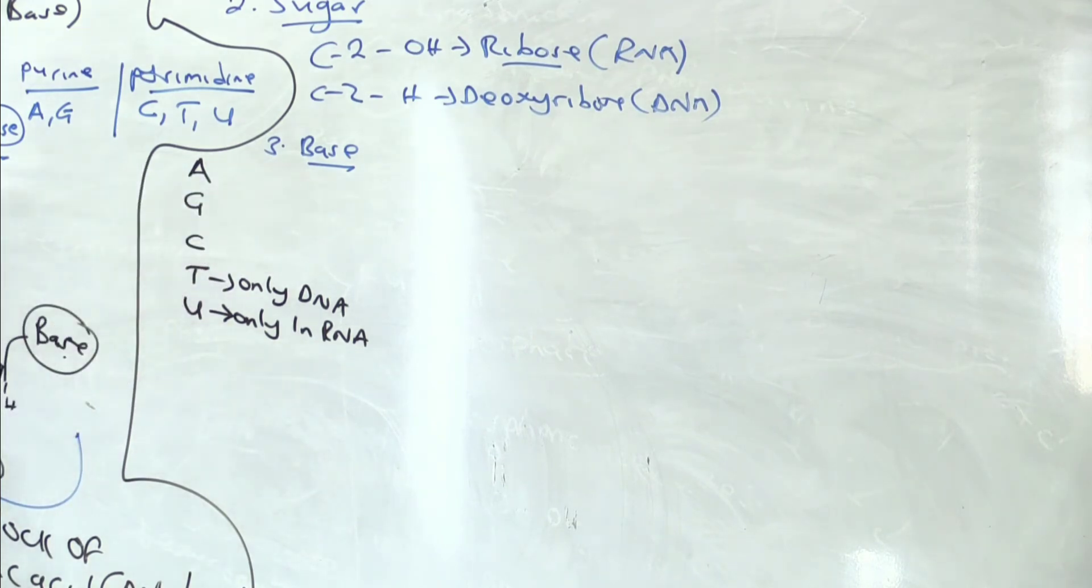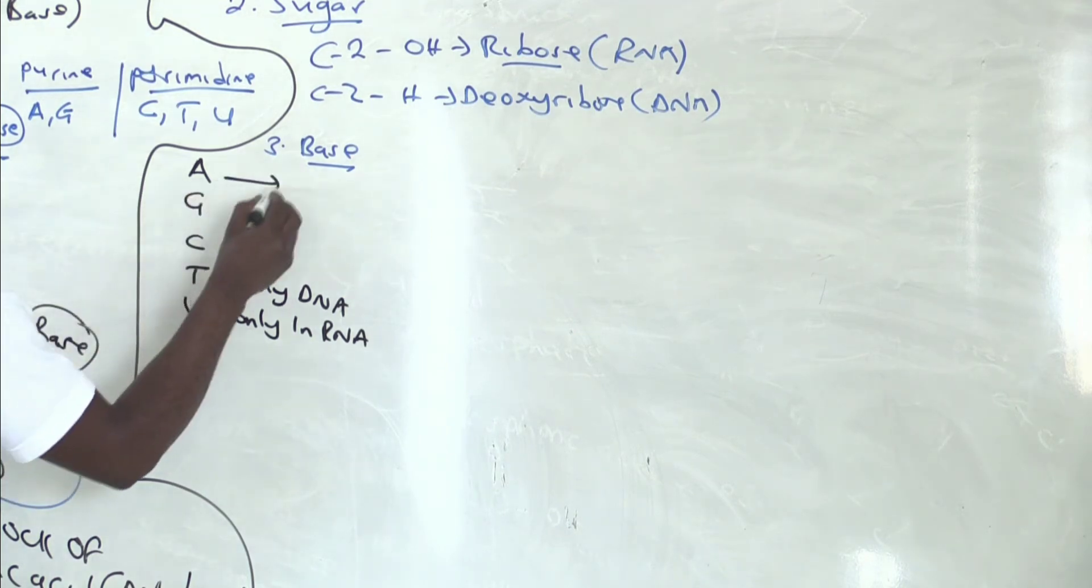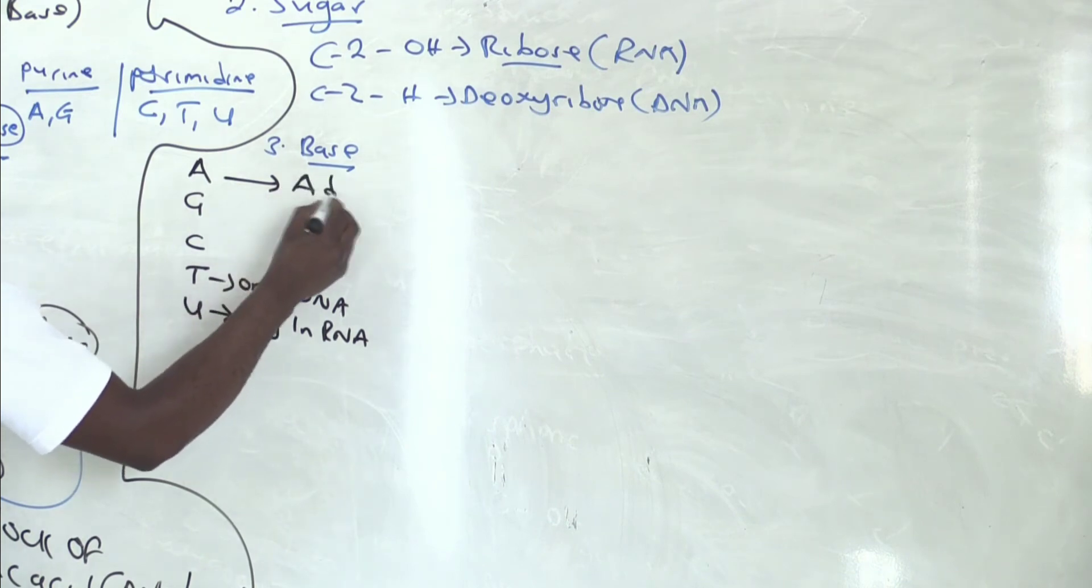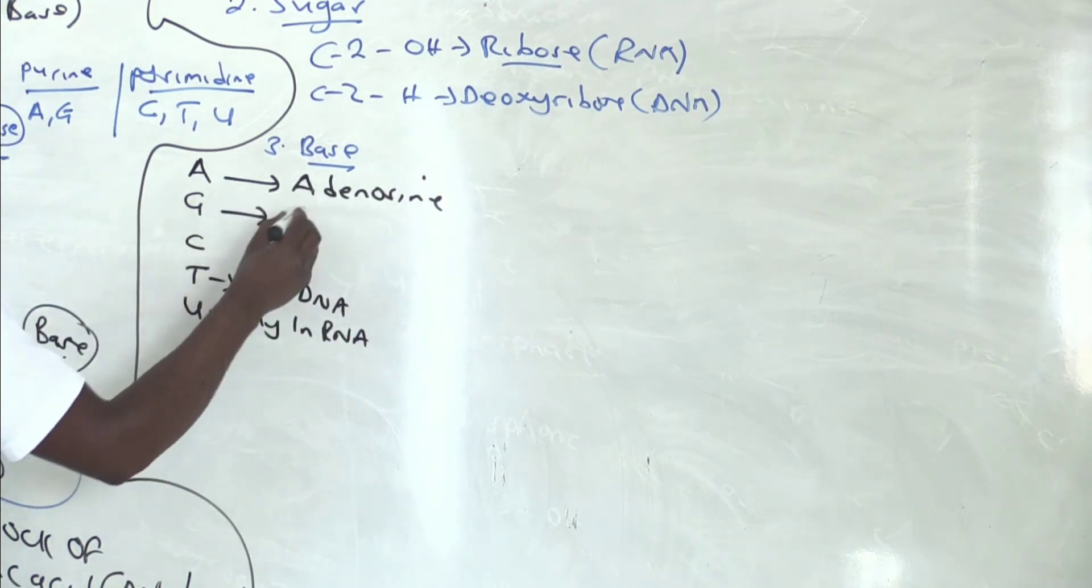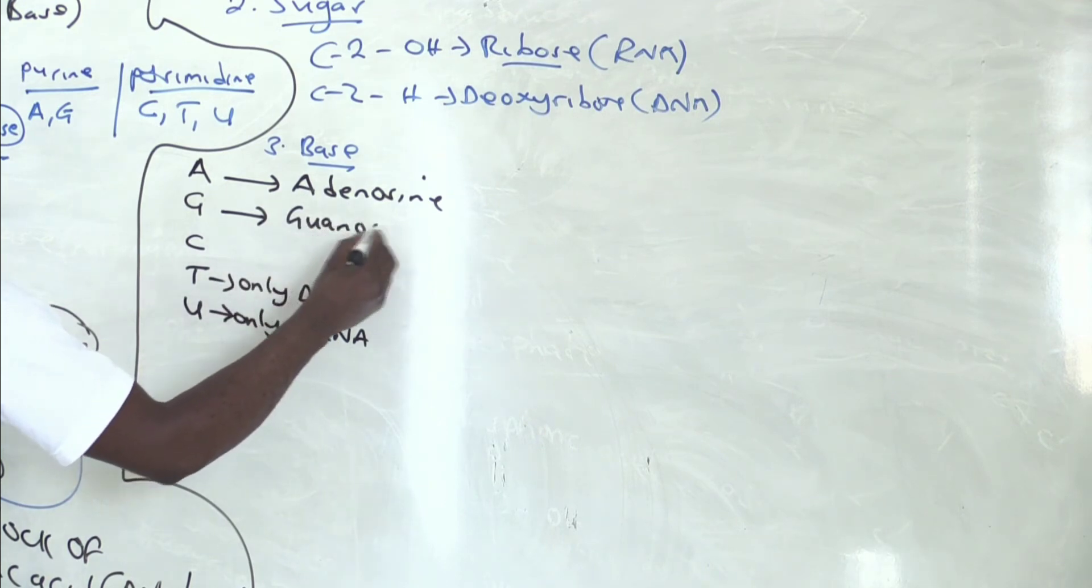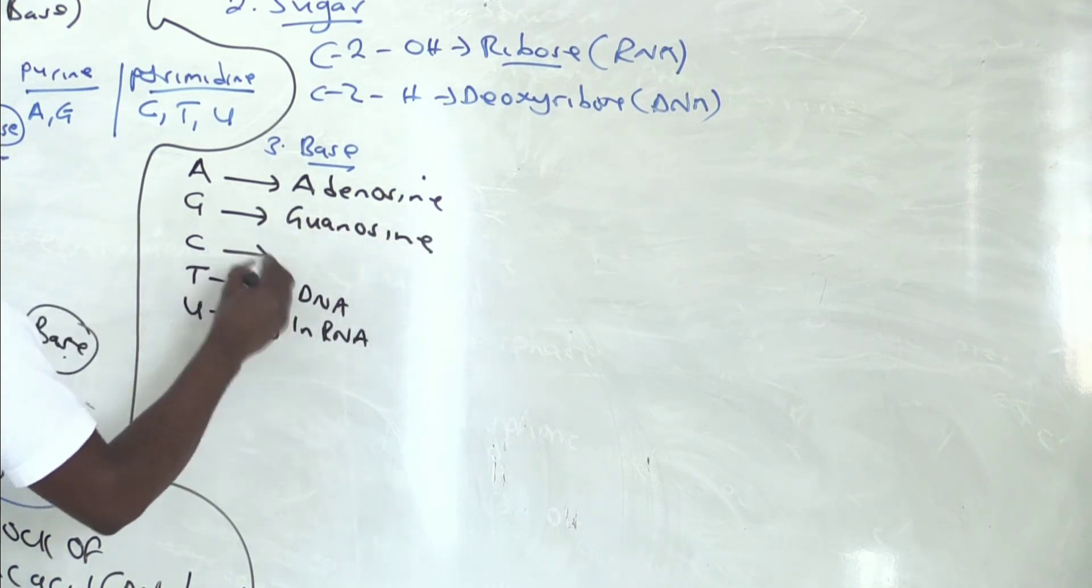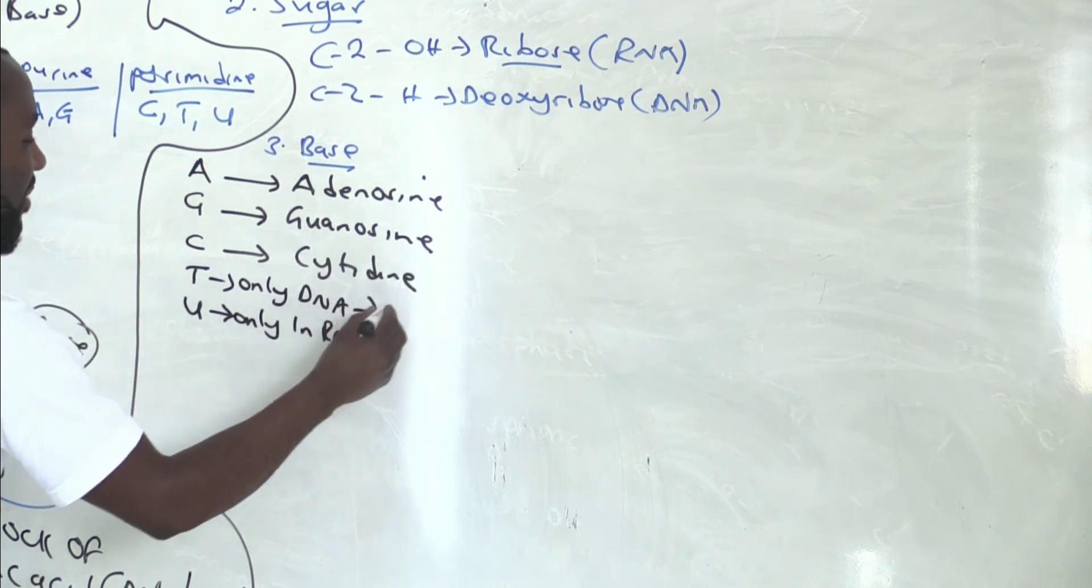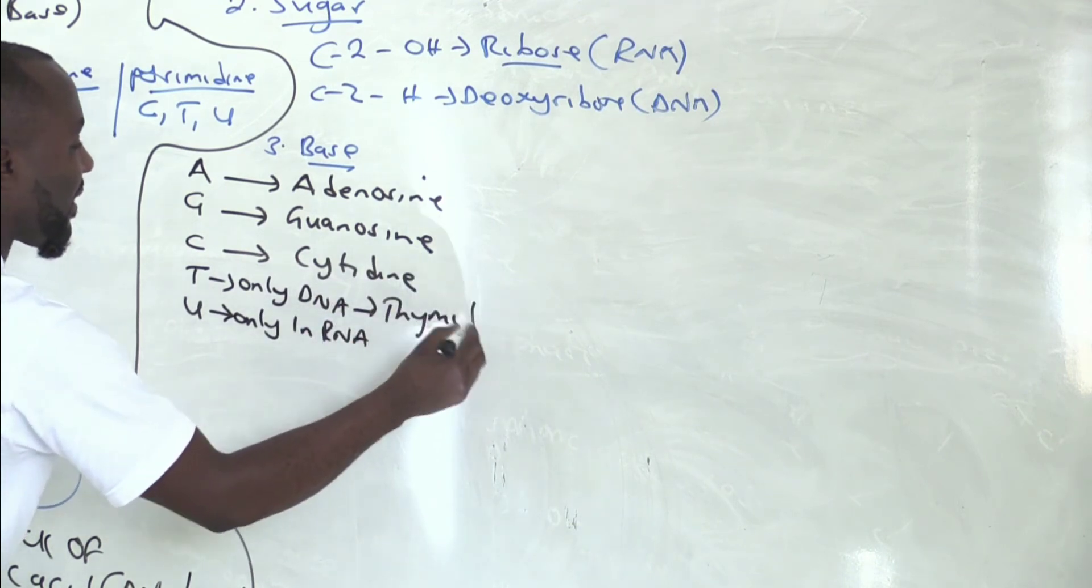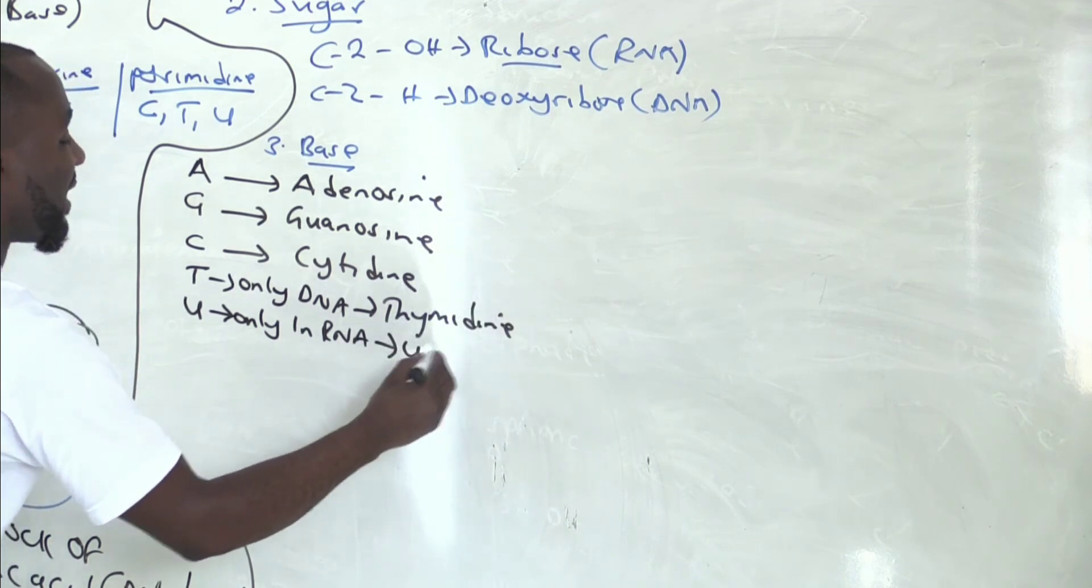Where do they attach? I showed you. Carbon number one, a base attaches there. So when you attach adenine there, it changes name and becomes adenosine. When you attach guanine, guanosine. When you attach cytosine, cytidine. When you attach thymine, thymidine. And when you attach uracil, uridine. So take note.